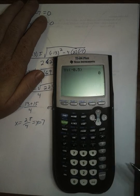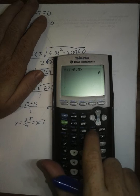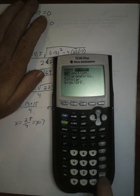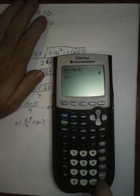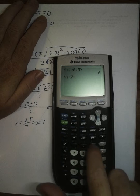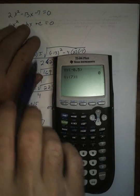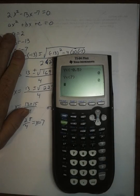And that is 0. And we can do the same thing. I can go vars, y vars, function, y1 of, and then I can say 7. When I plug 7 into this expression, my calculator very quickly calculates and tells me it's 0.